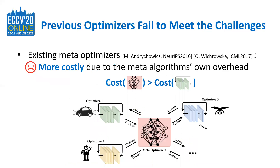Another kind is meta optimizers. Unlike traditional hand-crafted optimizers with manual design mapping from gradients to updates, meta optimizers use a neural network for such mapping. Their input is the gradient from the optimizees — that is, the machine learning models to be optimized during adaptation — and their output is the updates for those optimizees. With such a learnable design, they have better generalization ability than traditional optimizers; in other words, they have the one-for-all feature and can work with various models and environments without tuning. However, they are often more costly due to the meta algorithm overhead, which makes the challenge of implementation with boosted training energy or time efficiency a more serious problem.